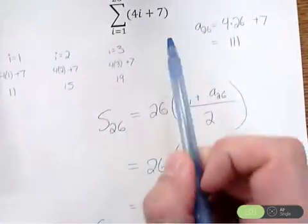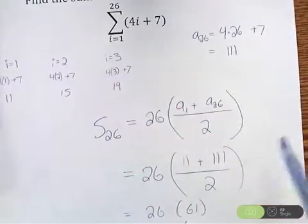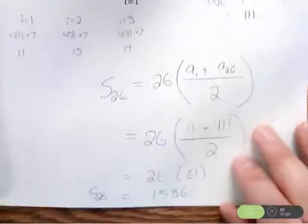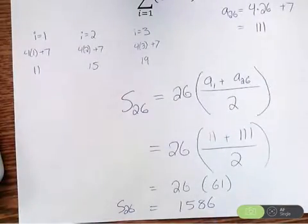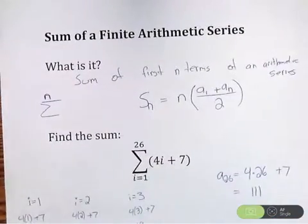Or if you use this formula and the shortcut, you could quickly go from doing 26 calculations to doing only a few and figuring out this sum is 1586. So that is the sum of a finite arithmetic series.